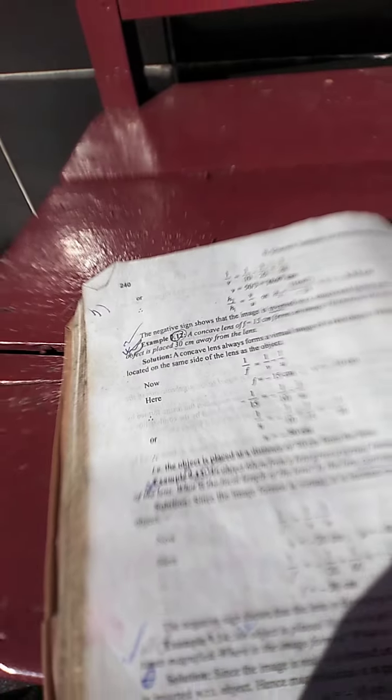An object 60 centimeters from a lens gives a virtual image at a distance of 20 centimeters in front of the lens. What is the focal length of the lens? Is the lens converging or diverging? We have to determine this after calculating.